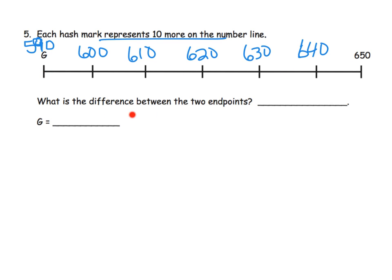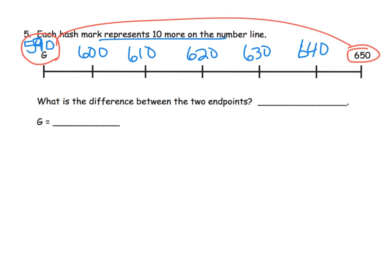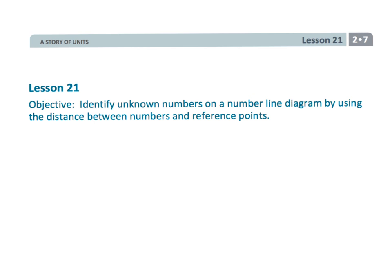Continuing left: 640, 630, 620, 610, 600 — and going back one more gives us 590, which is tricky because we're crossing over the hundreds. What is the difference between the two endpoints, 590 and 650? One way: count by tens — 10, 20, 30, 40, 50, 60. Another way: from 650 to 600 is 50, plus 10 more gives 60. This is a good number talk — let students describe all the different ways they know the distance is 60. The value of G is 590.